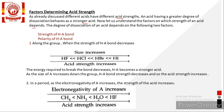Acidic strength basically depends upon two factors: the strength of the hydrogen–anion bond (H–A bond) and the polarity of the H–A bond. Consider a general acid HA like HCl, HF, and acetic acid.